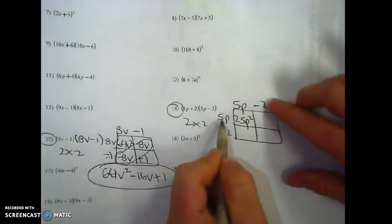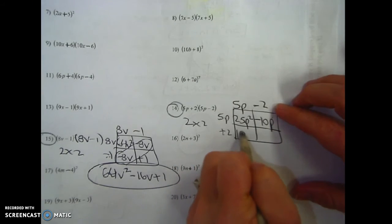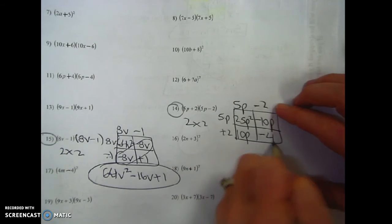5 times negative 2 is negative 10p. 5 times 2p is positive 10p. 2 times negative 2 is negative 4.